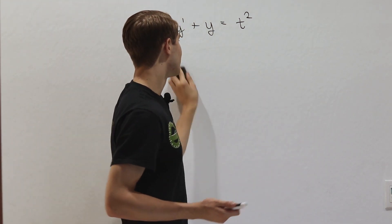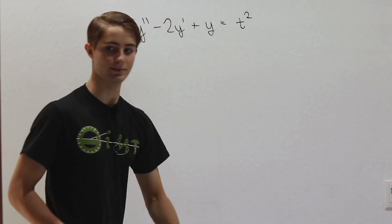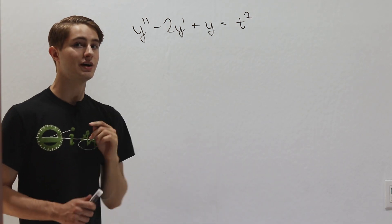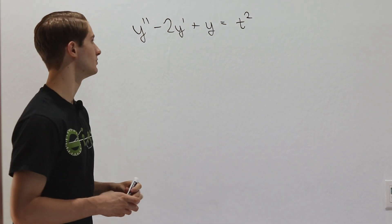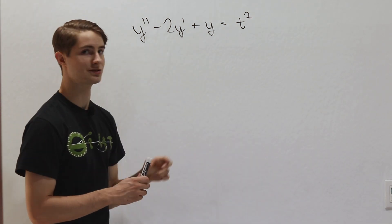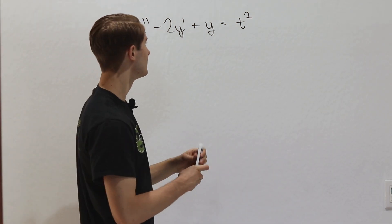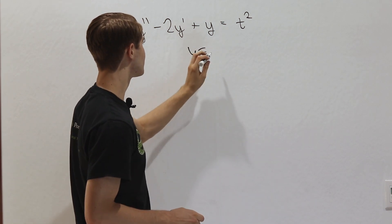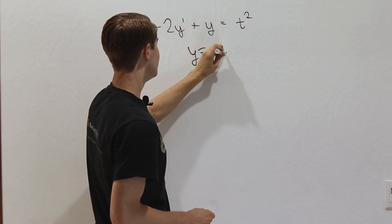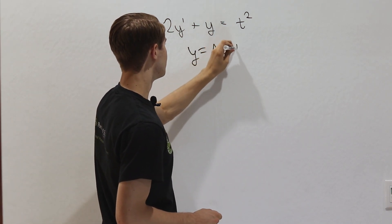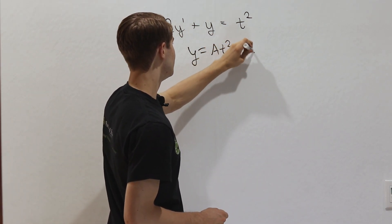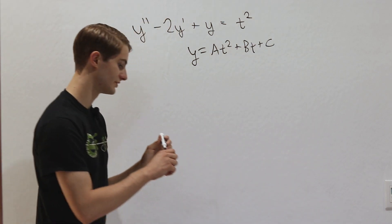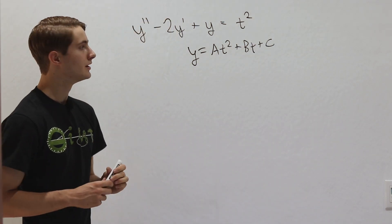Neither will e to the rt work. However, we do have one potential solution form, which is y equals at squared plus bt plus c.